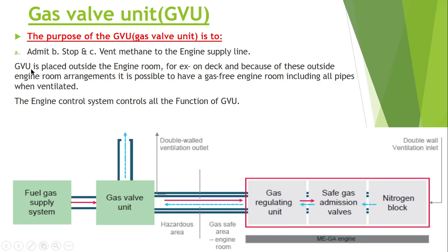The Gas Valve Unit is placed outside the engine room. As you can see through this diagram, the fuel gas supply system and the Gas Valve Unit are completely separated from the engine room area. Therefore it is provided outside the engine room — for example, on deck. Because of this outside-engine-room arrangement, it is possible to have a gas-free engine room with all pipes well ventilated.